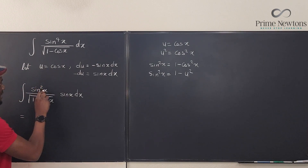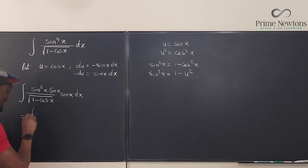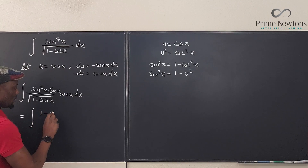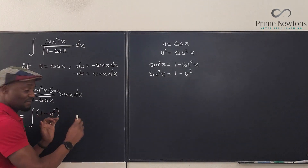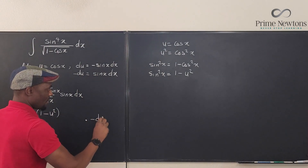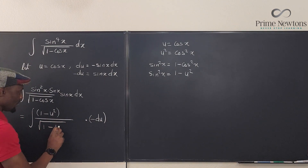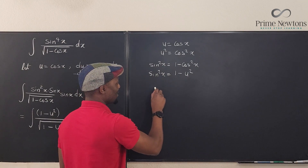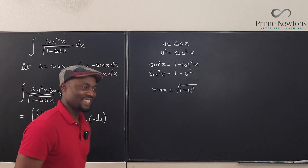I could actually have written sine cubed x as sine squared x times sine x. So the integral has sine squared x, which is 1 minus u squared, times sine x — I don't know how to write sine x so I'll keep it for now — times sine x dx, replaced by negative du, over the square root of 1 minus u. I know that if I take the square root, sine x equals the square root of 1 minus u squared, which makes life easy.